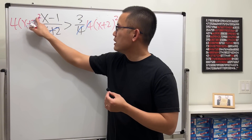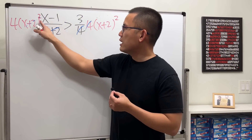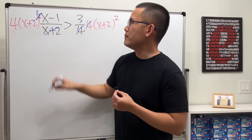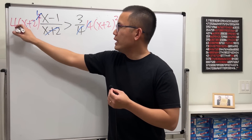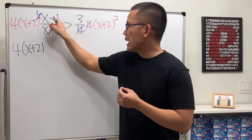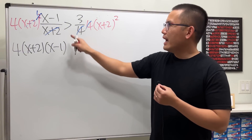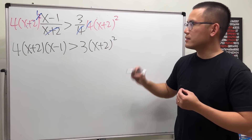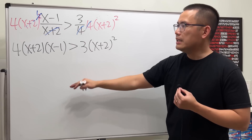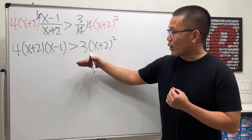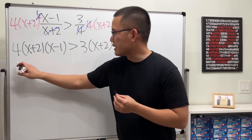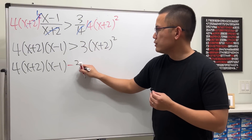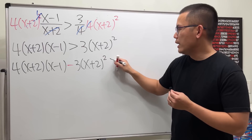When we multiply both sides by x plus 2 squared, we can cancel one factor of x plus 2 from each side. On the left we get 4 times x plus 2 times x minus 1, and on the right we get 3 times x plus 2 squared. Moving the right side over, we have 4 times x plus 2 times x minus 1 minus 3 times x plus 2 squared, all greater than zero.